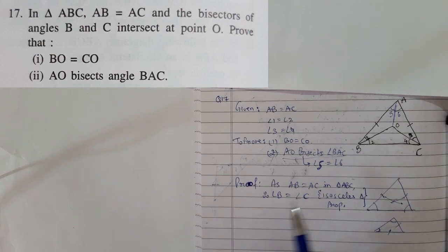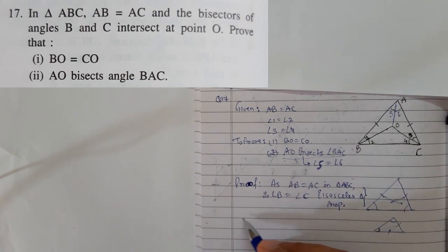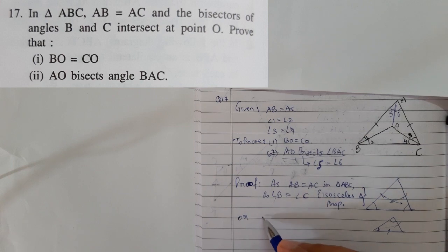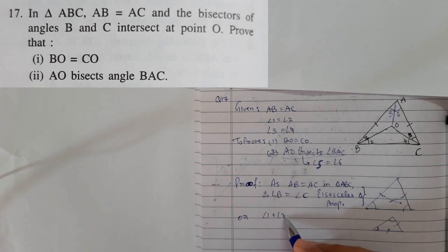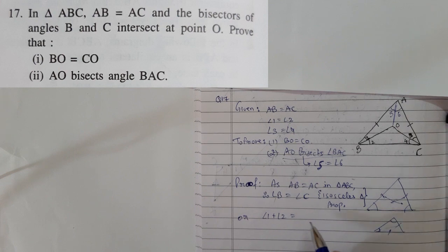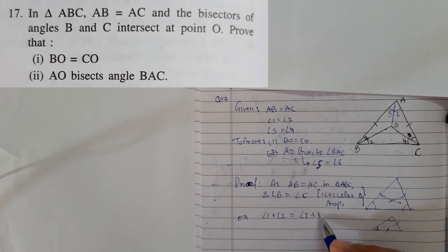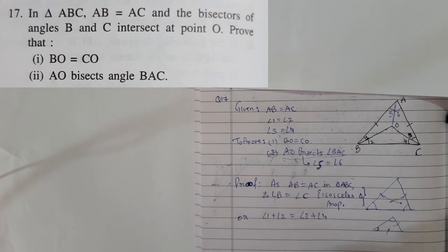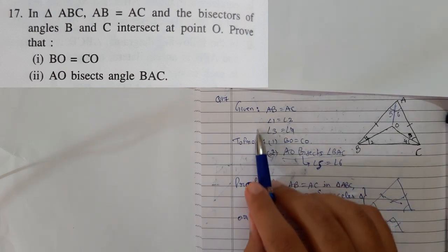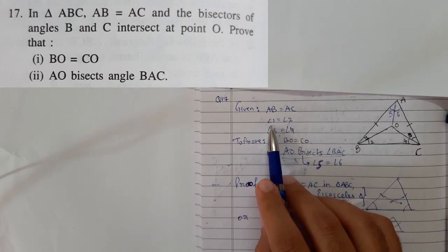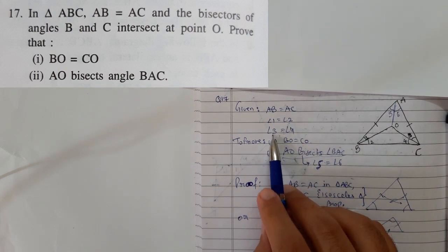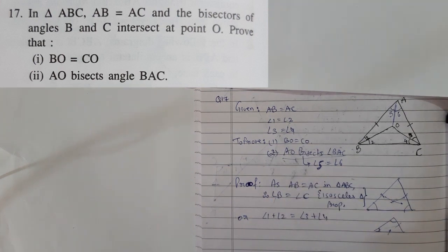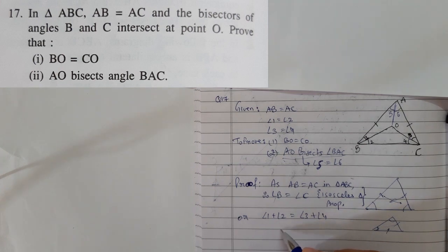Therefore, whole of angle B is equal to whole of angle C. We can say isosceles triangle property. Since angle B is divided into two parts, can I say this as angle B, write as angle 1 plus angle 2? And can I write angle C as angle 3 plus angle 4?